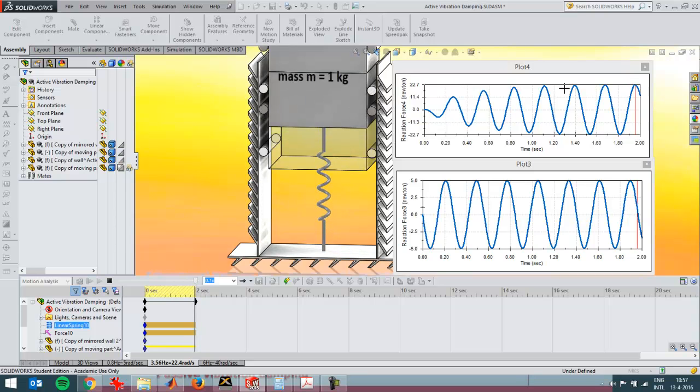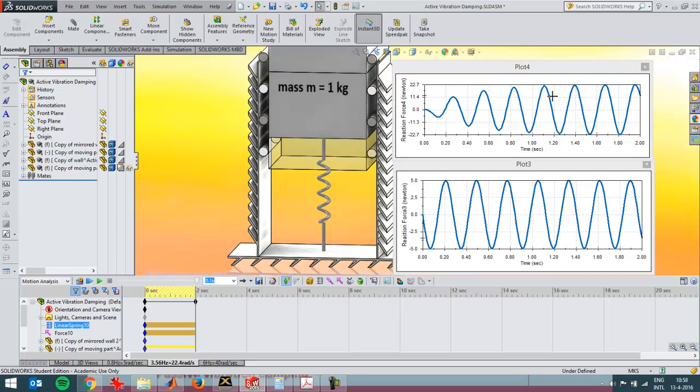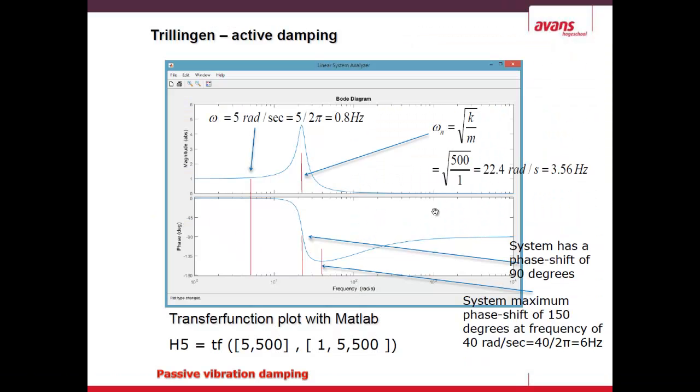You see here the force is continuing to grow. If the damping would be zero it would be growing until the construction would break, but the damping is not zero in this case. When I switch back to the graph, the frequency graph, you see that this is in the natural frequency and then we've got the maximum amount of movement that is caused.